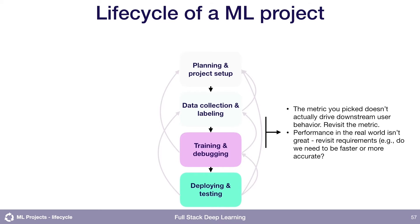Another really common thing that happens at this step is: we've picked a single metric for our project and we've been driving that number down, but then when we deploy things into production, we realize that even though our model is performing really well according to accuracy or something like that, it's not actually driving downstream user behavior — the end goal of the model in production is not being met. So you might go back and revisit what's the right metric to optimize for this model.